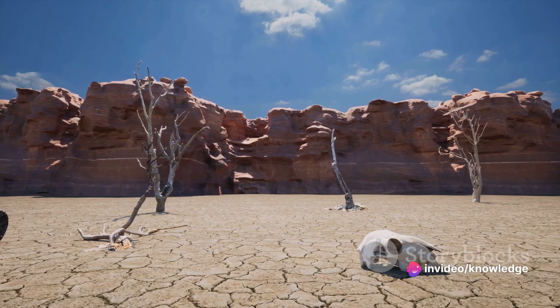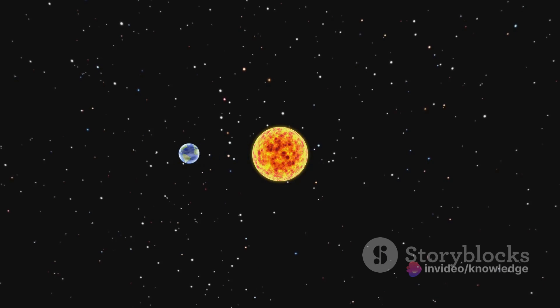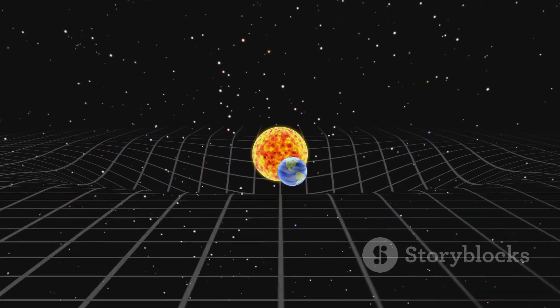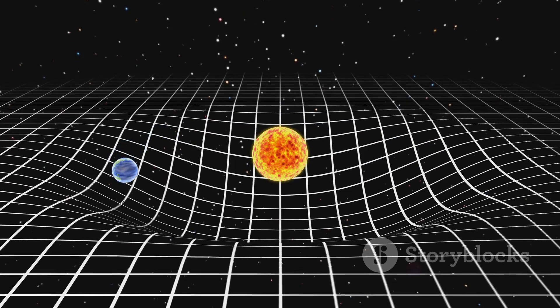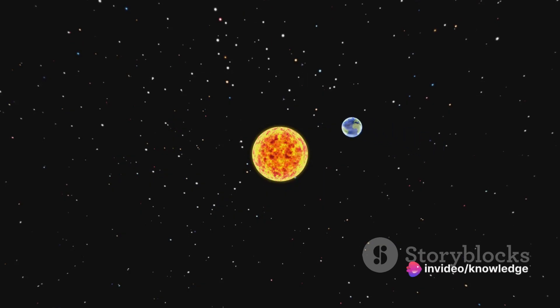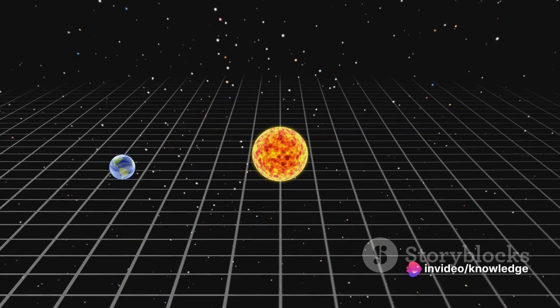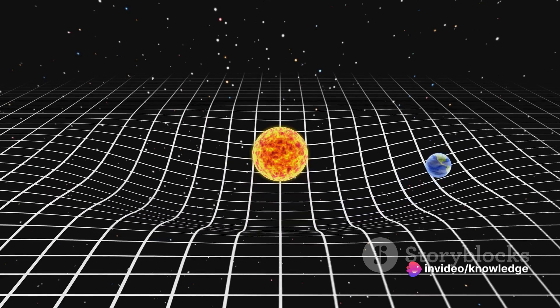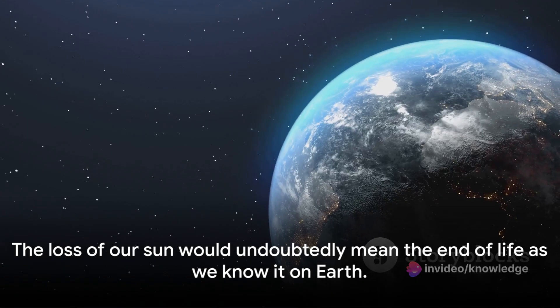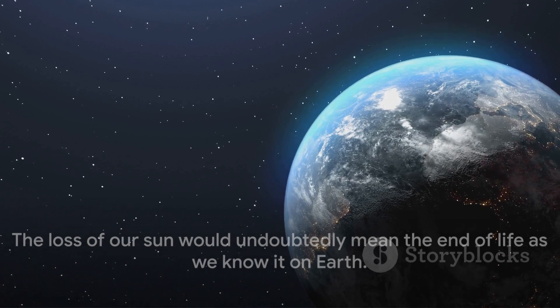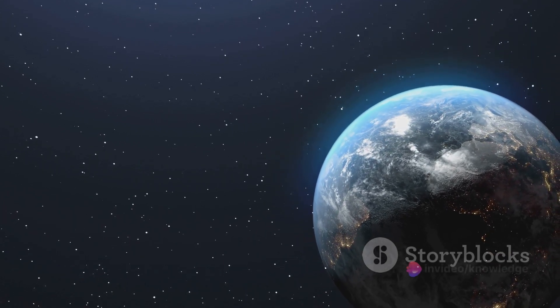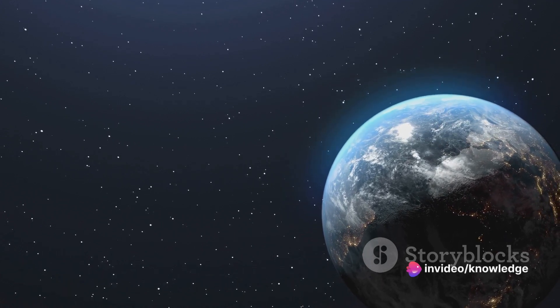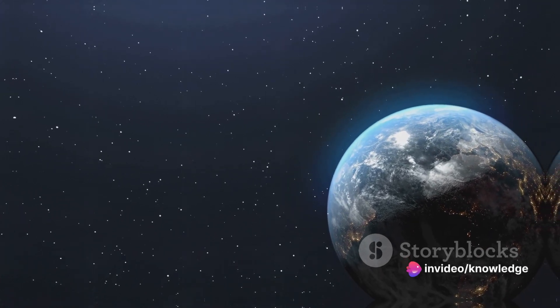Further, the absence of the sun would also mean the loss of gravitational pull that currently keeps our planet in orbit. Without this, Earth could be sent hurtling into the depths of space, on a lonely, aimless journey through the cosmos. The loss of our sun would undoubtedly mean the end of life as we know it on Earth. Without our life-giving star, our planet would be left a cold, lifeless sphere, drifting aimlessly through the endless expanse of space.